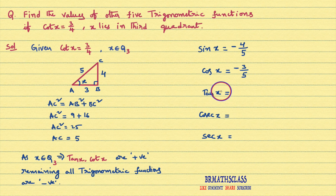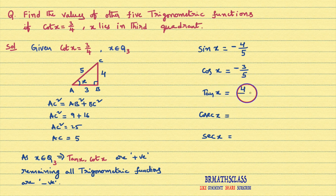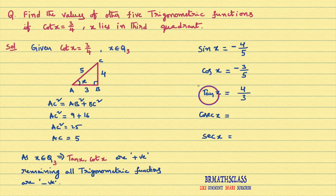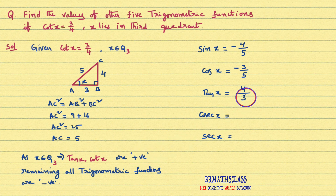Tan x is defined as opposite side by adjacent side. Opposite side is 4 divided by adjacent side 3. As X lies in third quadrant, tan x is positive. Therefore, tan x equals 4 by 3.